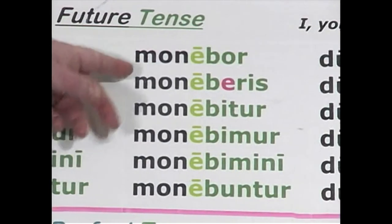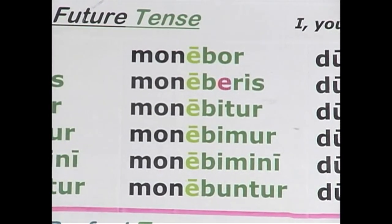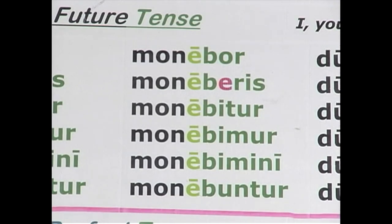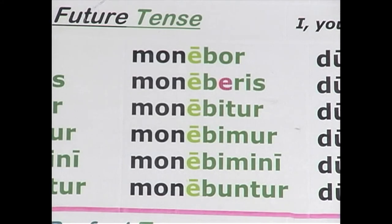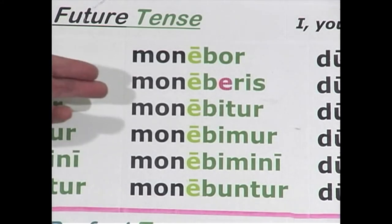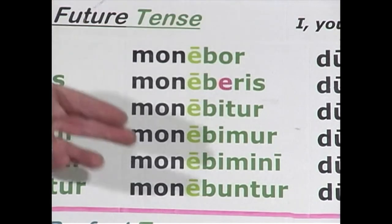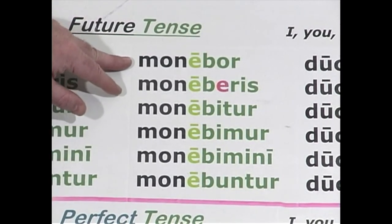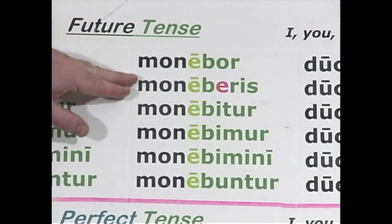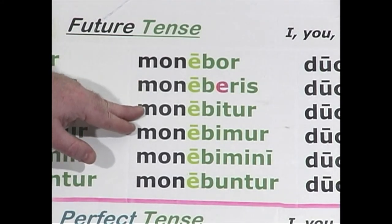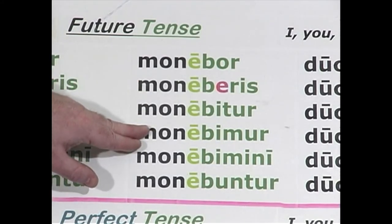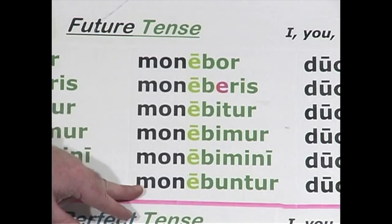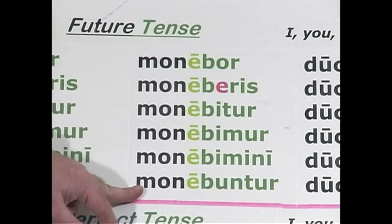For moneo, same pattern. You add this unique set of future passive endings to the stem of the verb: monebor, moneberis, monebitur, monebimur, monebimini, monebuntur. Translation: I will be warned, you, he, we, you plural, they will be warned.